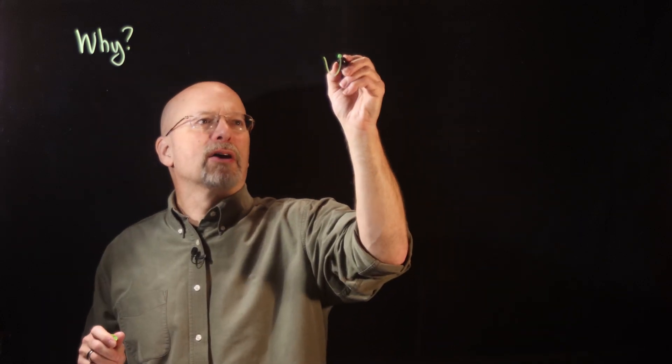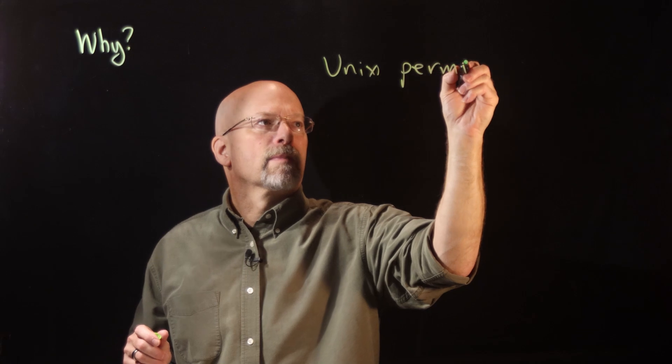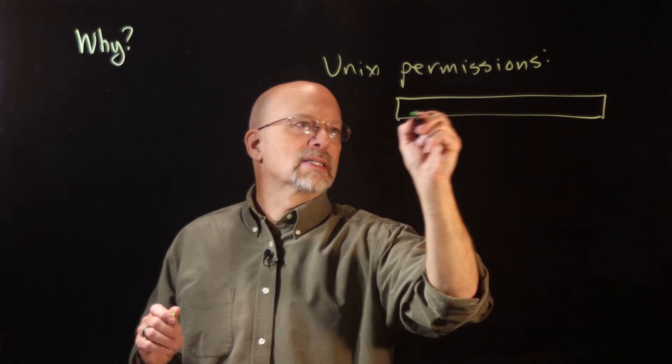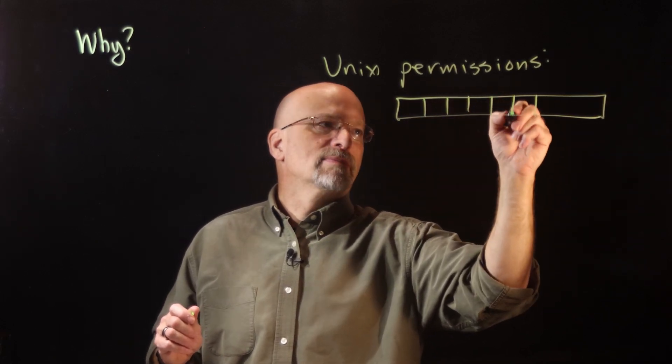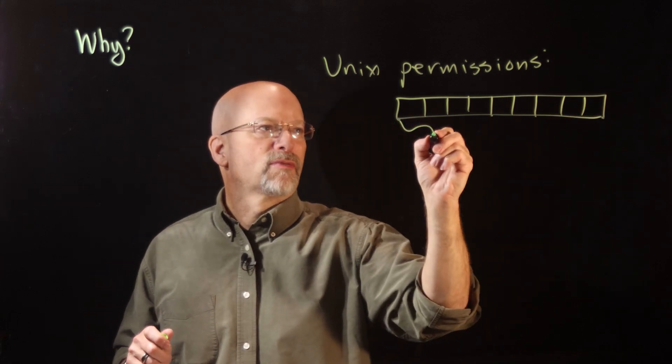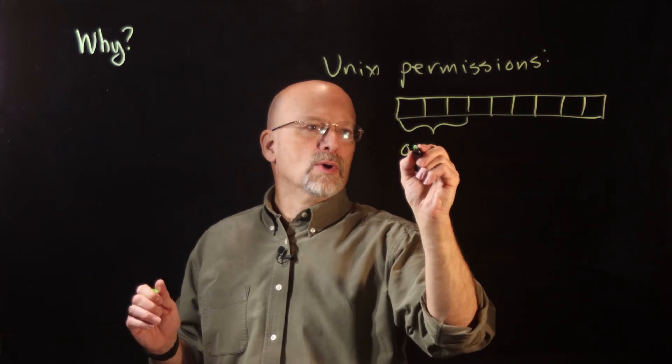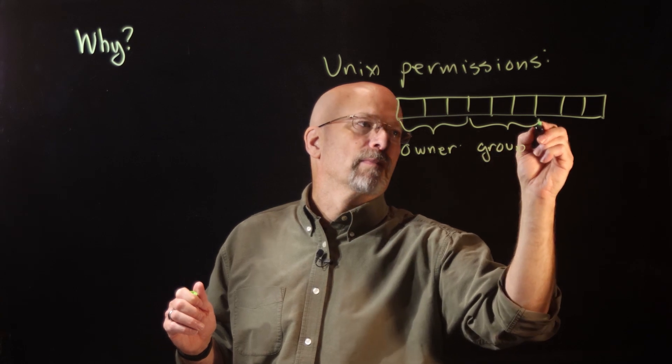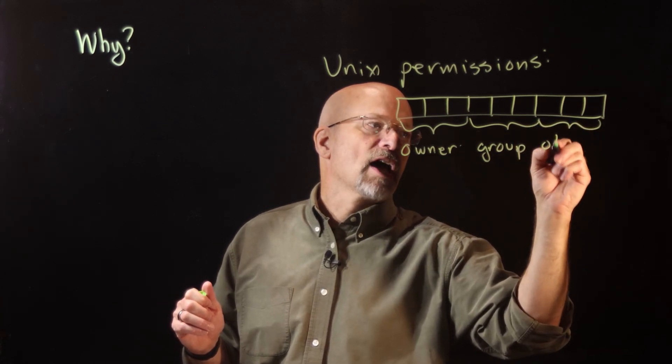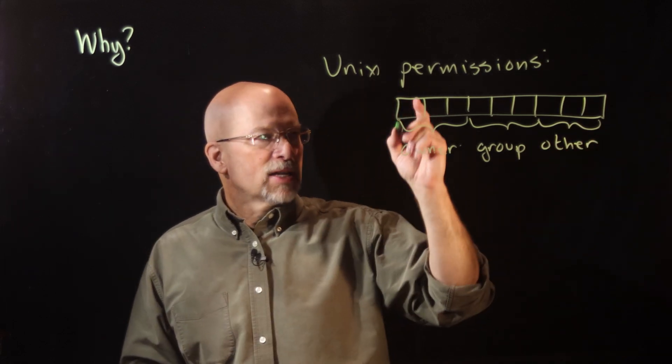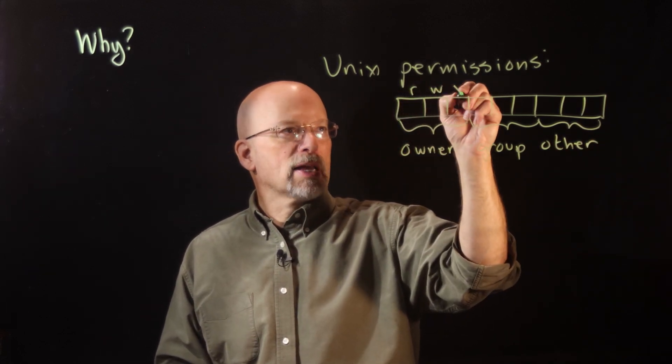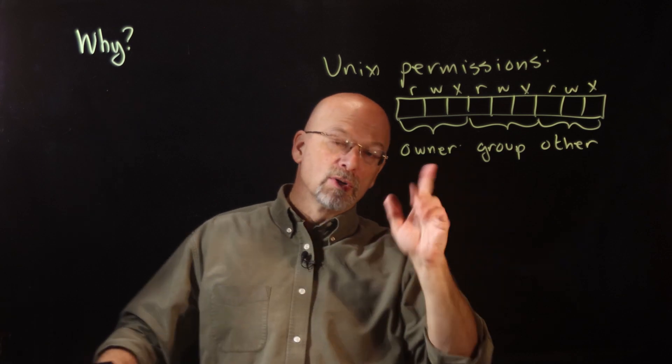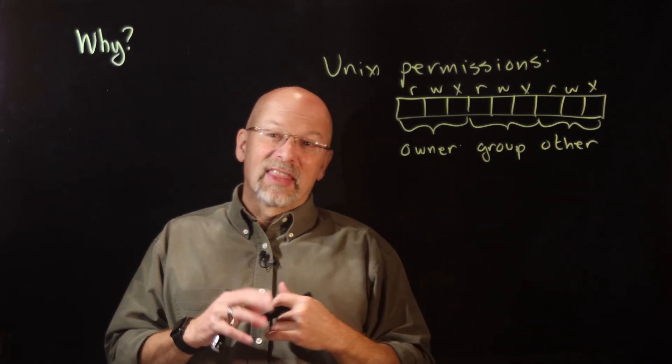For example, whenever we're talking about Unix permissions, Unix permissions are done with a 9-bit binary value. The first three bits are the owner's permission. The next three bits are the group's permission. The last three bits are other permission. And what it does is it says you can read, write, or execute for each group. We put ones or zeros in those bits to set them or clear them.